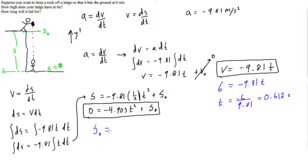So what we can do is we can say that s naught is equal to, we'll move this to the other side, four point nine oh five, and now we have the t which is zero point six one two seconds squared. And if you do this, you punch this into your calculator, we are gonna get s naught, the starting height, will be one point eight three meters.